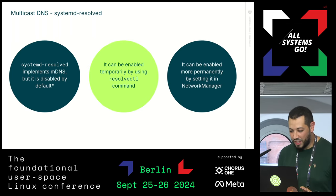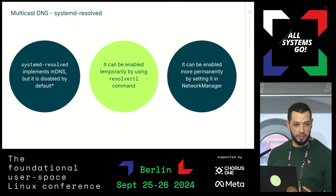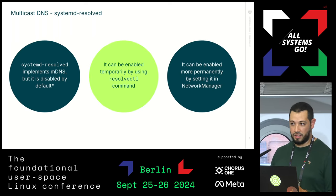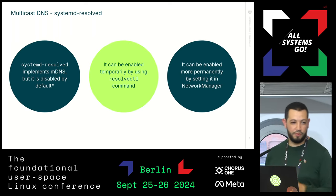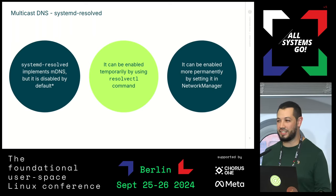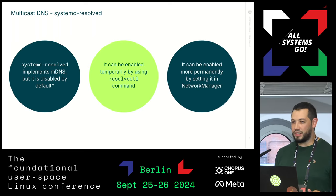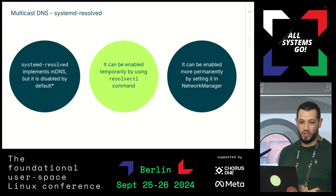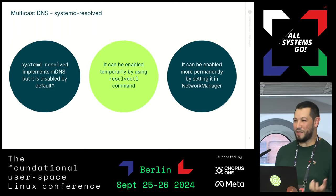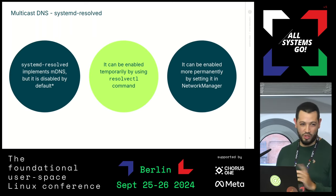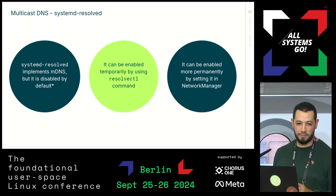We can use the resolvectl command to enable MDNS on a specific network interface, and we can enable it permanently by setting it in NetworkManager, for example, or in networkd if that's what we're using. One thing to be wary of is that you can't have two MDNS resolvers on the same host — so you can't have Avahi and resolved both doing MDNS on the same network interface. You can have the two each on a separate network interface, but not on the same one.